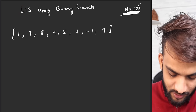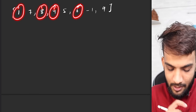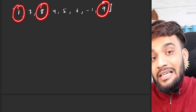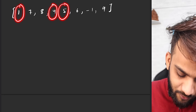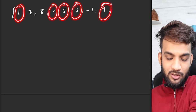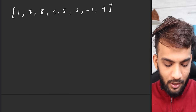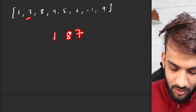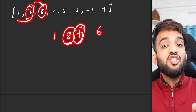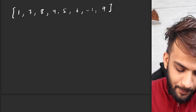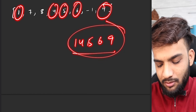What is the longest increasing subsequence? You can call a subsequence like one, eight, four, six — this is a subsequence but not increasing. You can call something like one, eight, nine as an increasing subsequence. Similarly, you can call something like one, four, five, six, nine as the longest increasing subsequence of length five. A subsequence is a contiguous or non-contiguous part, but it must follow the original order.